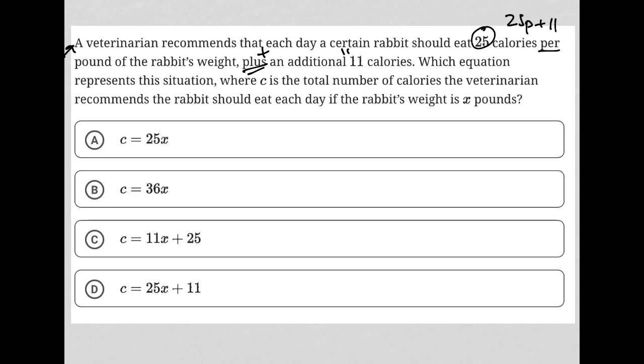The next sentence says, which equation represents this situation where C is the total number of calories, so C will go out here for total number of calories, the veterinarian recommends the rabbit should eat each day if the rabbit's weight is X pounds. Okay, so not P, but actually an X goes here.